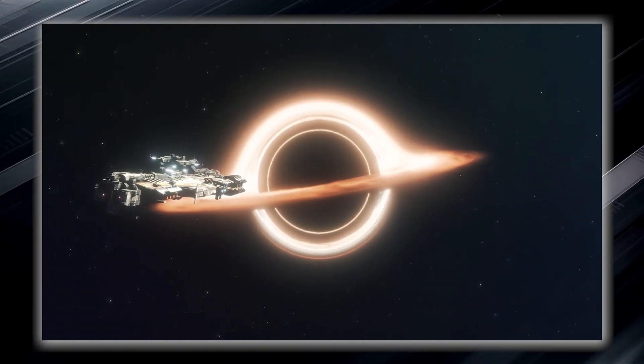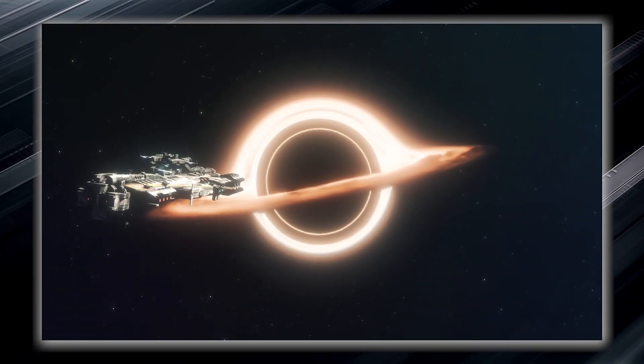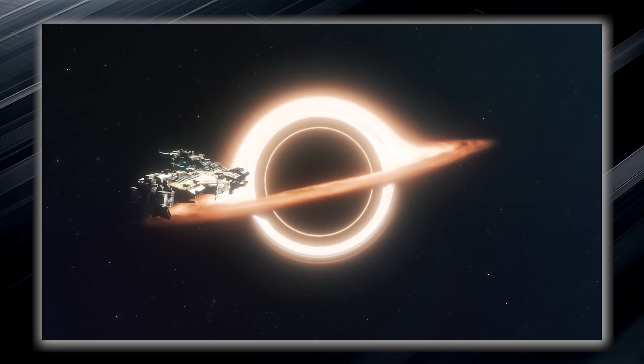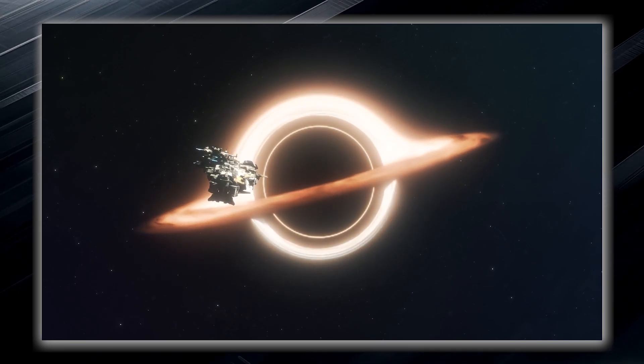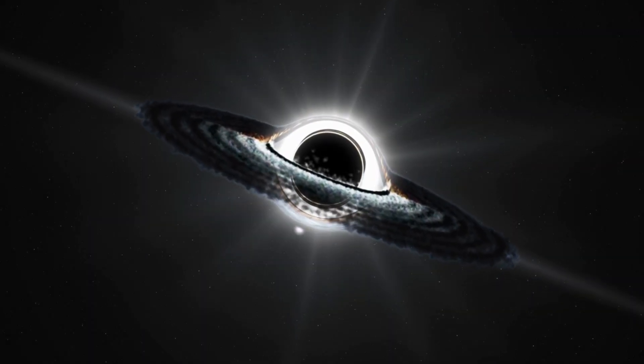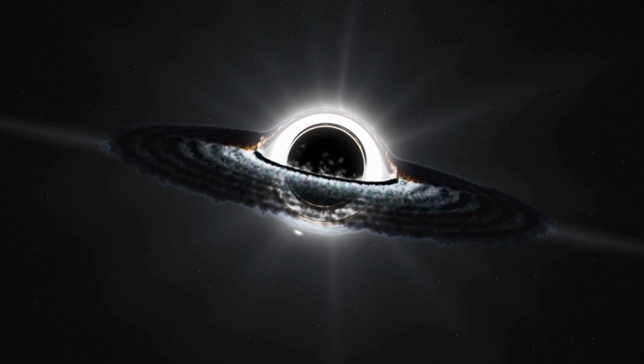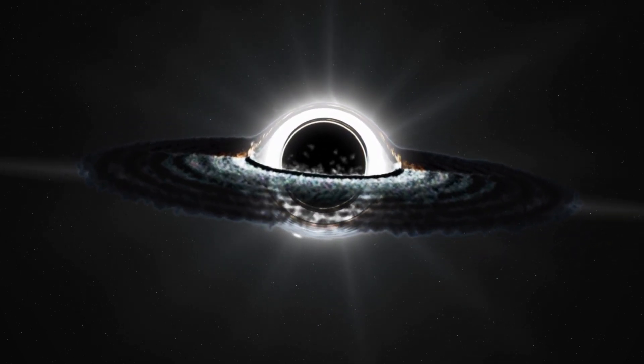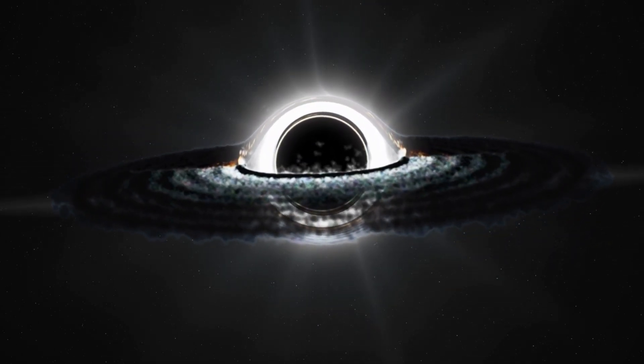Once something, such as an unfortunate spacecraft or even light, crosses its boundary, it can never escape the clutches of the black hole. The event horizon forms an invisible force field that holds everything within it, including light, which is normally considered the fastest entity in the universe.